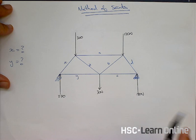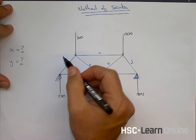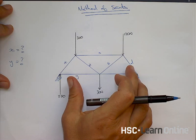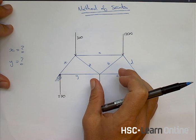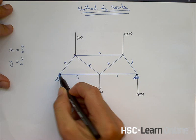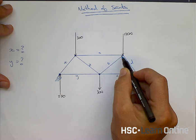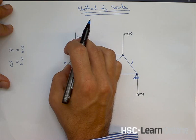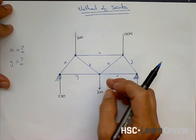We could do quite a complex calculation using all these different forces, but the method of joints says that if this bridge is not spinning or moving up or down — and is therefore in equilibrium — each joint in the bridge is also not spinning, moving up, or moving down. So each joint is in equilibrium as well.